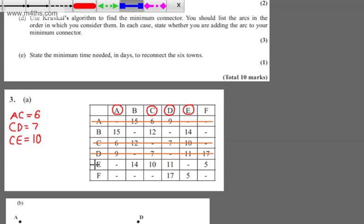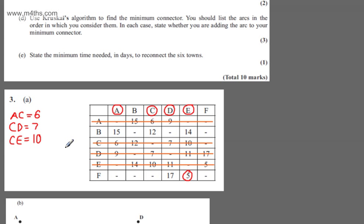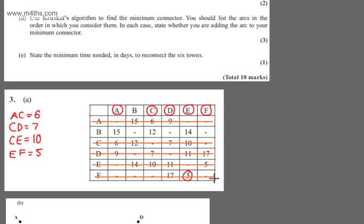We now need to consider all the weights in columns A, C, D, and E. By the looks of it, it's going to be 5, just here. I've got the choice of 15, 12, 17, 14, and 5. That would now connect E to F. E to F is going to be equal to 5. I can circle F and then cross out that row.